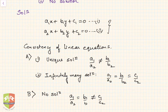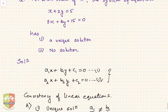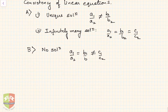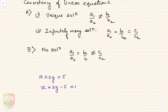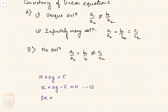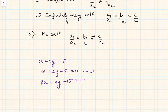Now let us solve the given problem. The equations are x plus 2y equals 5. Since it is not in standard form, I'm rewriting it as x plus 2y minus 5 equals 0 — let this be equation 1. The second equation is 3x plus ky plus 15 equals 0 — this is equation 2.